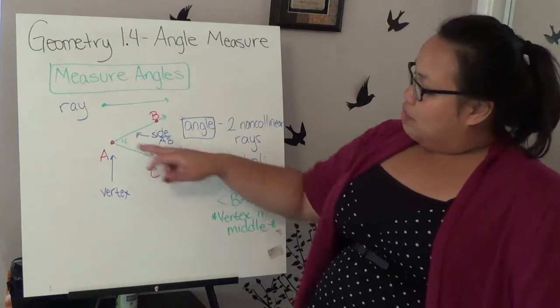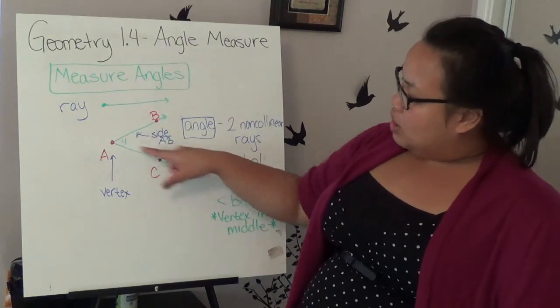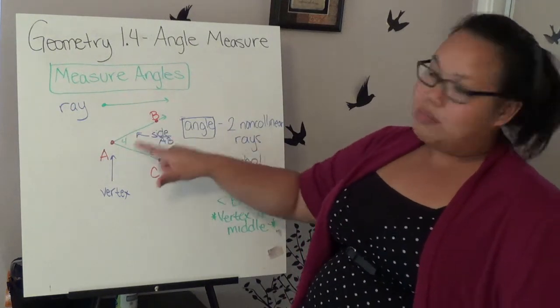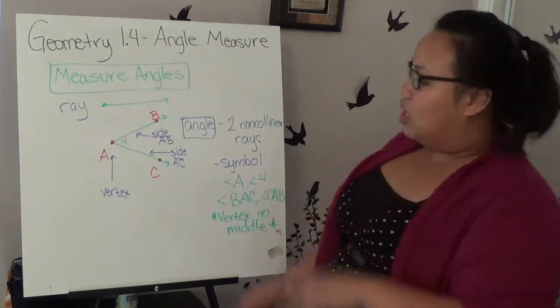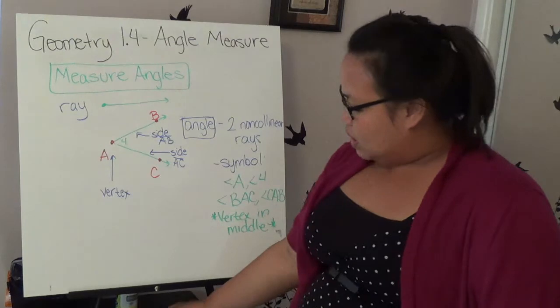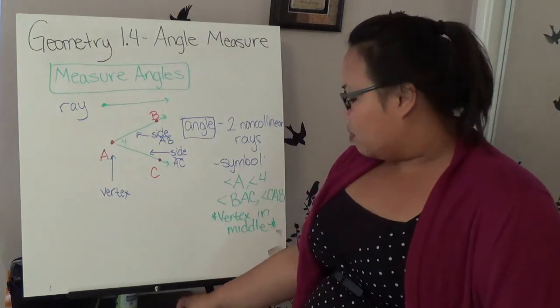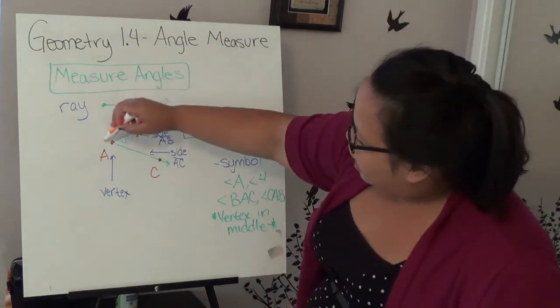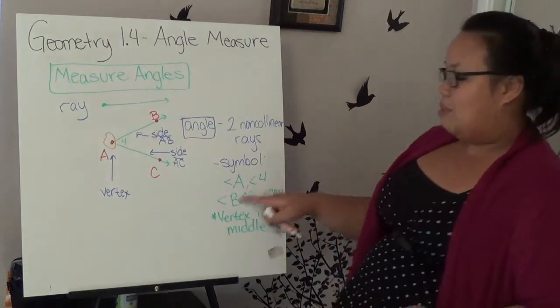The angle has two sides. This side is called AC and this side is called AB. Basically, you just name the line. This right here is very important. This is called the vertex.